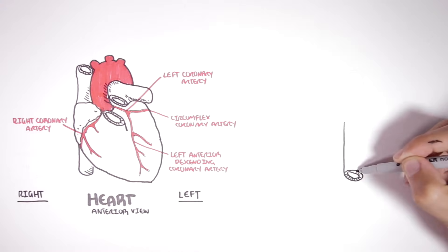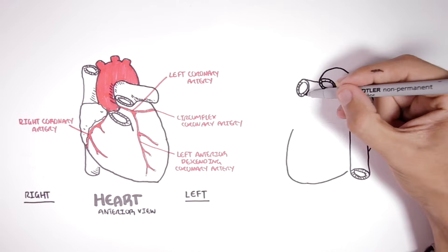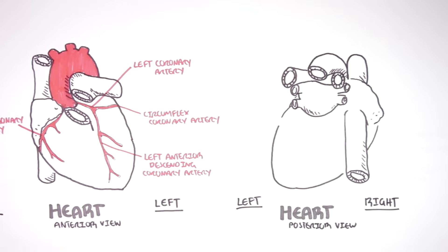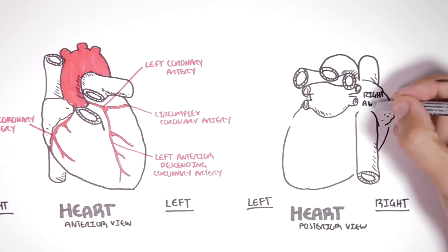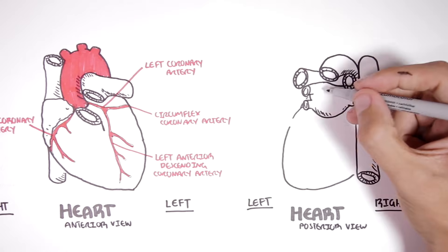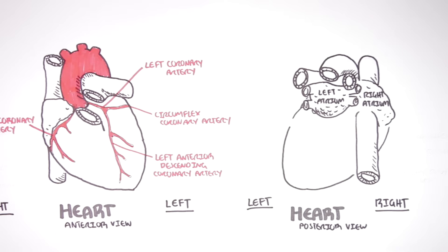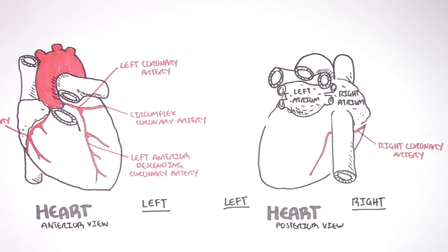If we look at the heart from the posterior view, so from the back, here we have the left side of the heart and here we have the right side of the heart. Just so we know where we are, this is the right atrium here and this is the left atrium here. Let's continue looking at the coronary arteries which came from the anterior view. This is part of the right coronary artery, the posterior descending artery that wraps around to the back, and supplies the right ventricle and the right atrium with blood.